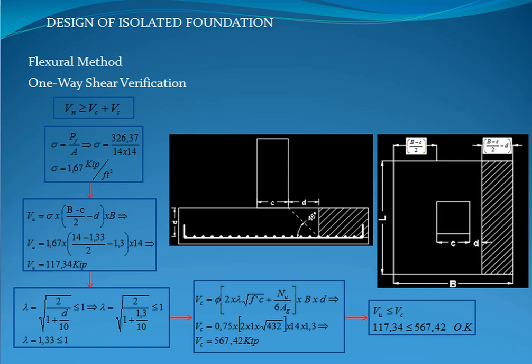The one-way shear verification is the critical zone where it is expected that the cracking to occur in the footing from the face of the column or pedestal with an angle of 45 degrees. As mentioned in the previous tutorial on isolated foundation design, the foundation won't be designed with shear reinforcement, which means PS is equal to zero.